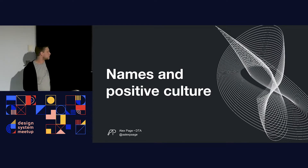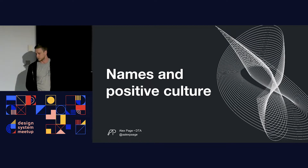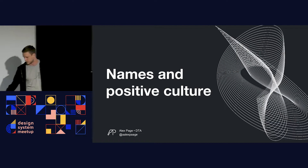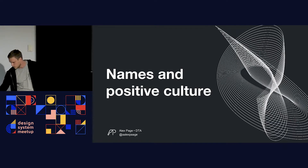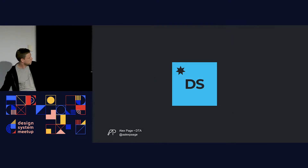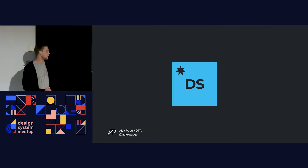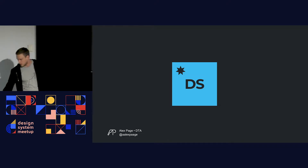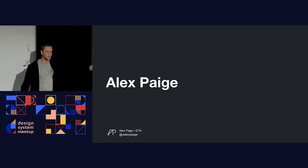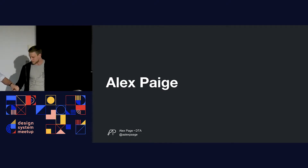In design systems, we have lots of names — from the design system itself to variable names, to functions, and open source repositories that we host them on. I'm currently building the Australian Government's design system. My name is Alex Page — not spelt like that, it's actually Alex Page like a book.